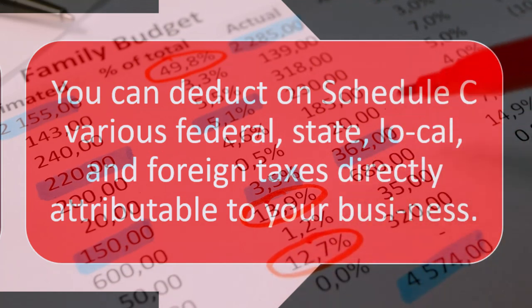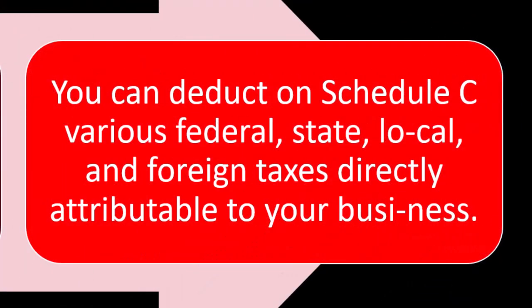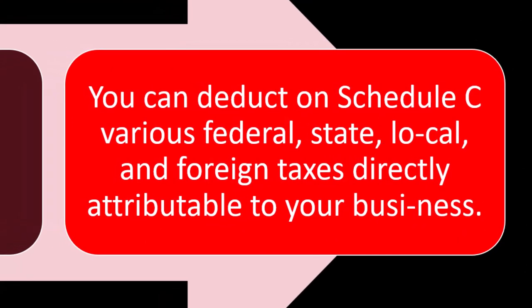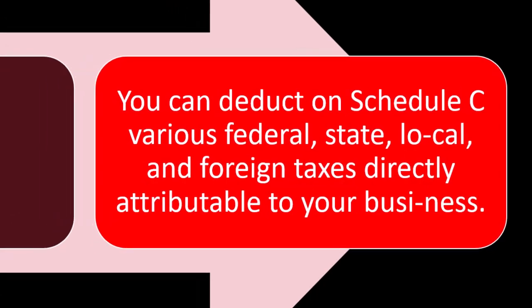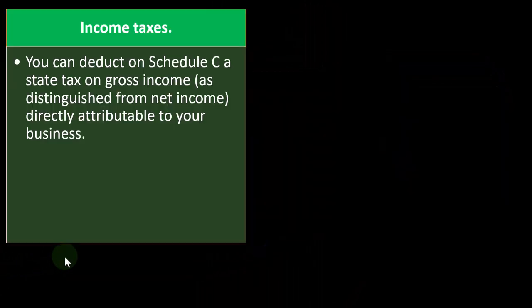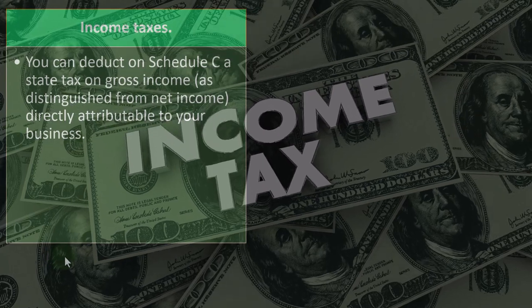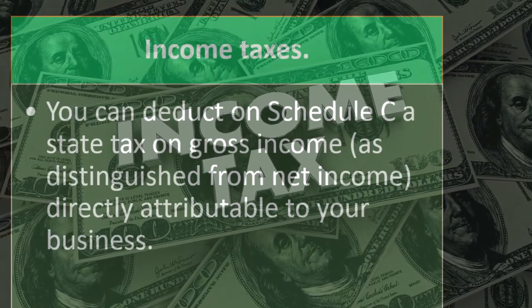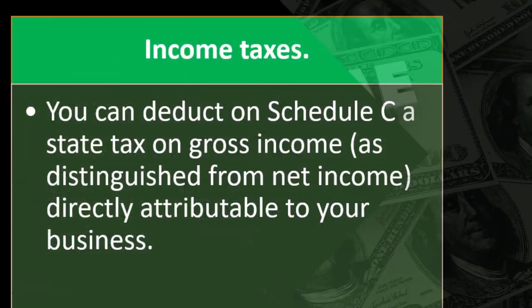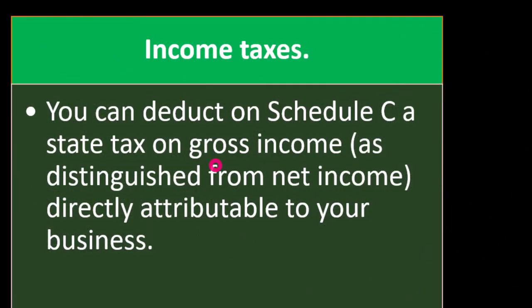Were those taxes ordinary and necessary expenses for the business? Did we need to pay them in order to help generate revenue? You can deduct on Schedule C various federal, state, local, and foreign taxes directly attributable to your business. For income taxes, you can deduct on Schedule C a state tax on gross income. When we hear U.S. income tax, you usually think federal income tax, but here we're talking about state income taxes, remembering that the state and local tax systems are, to at least some degree, sovereign from the federal tax system.